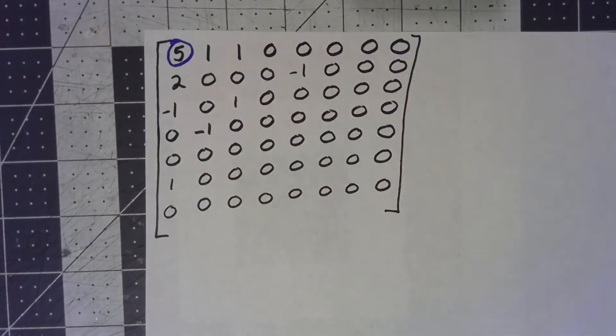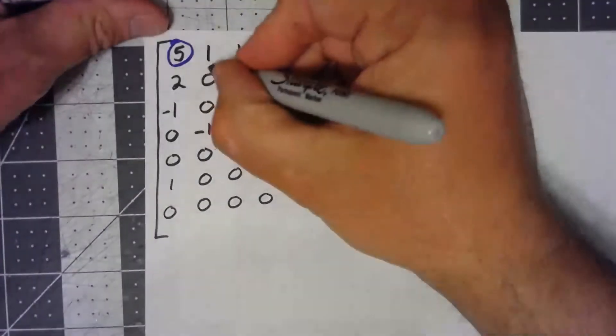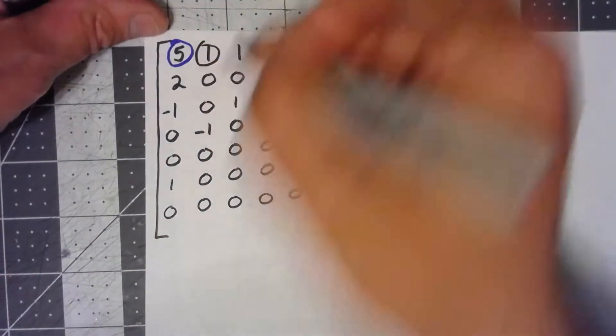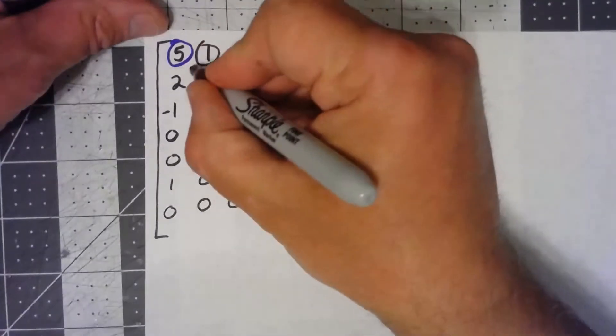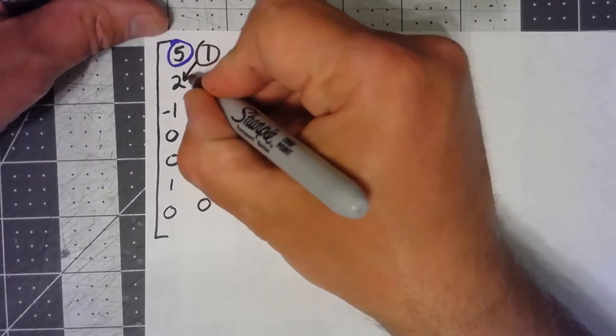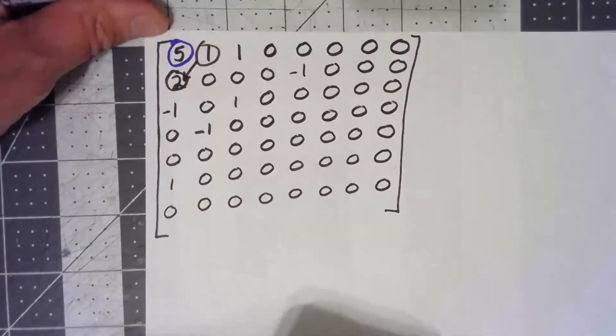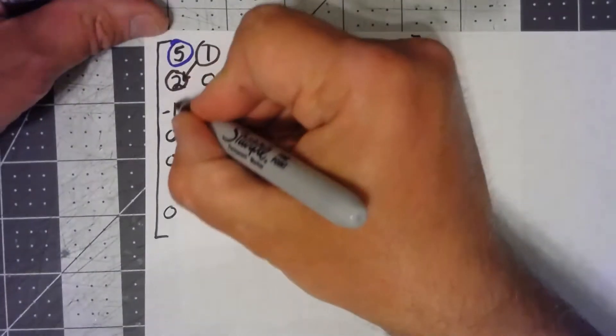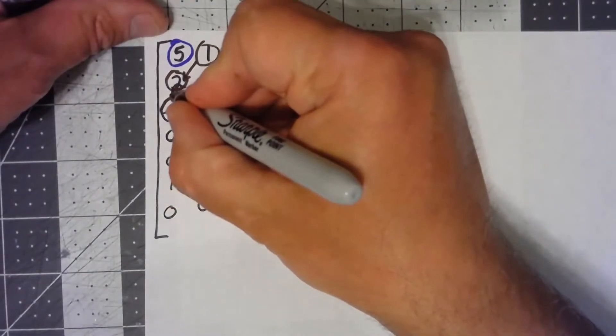It's actually very similar to the way a Cantor diagonalization argument works. We're going to go ahead and say, the first thing I'm going to code is this one right here. Then I'm going to go down along that diagonal, the next one would be that. Then I move down.